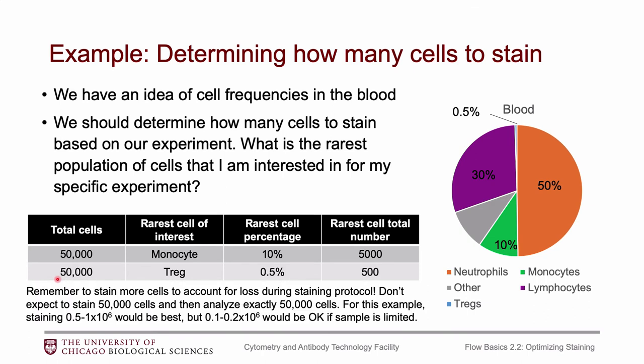If this seems more complicated than your actual experiment — say you have a cell line and you're just looking at GFP-positive cells, one color — then somewhere around 10,000 to 50,000 cells should be plenty.